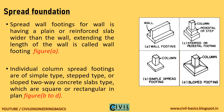The spread foundation: spread wall footings for a wall have a plain or reinforced slab wider than the wall, extending the length of the wall, and is called wall footing — see figures A, B to D for spread wall footing. Individual column spread footings are of simple type, step type, or sloped two-way concrete slabs type, which are square or rectangular in plan — see figure B to D for individual column spread footing. You can easily understand this type of foundation by seeing the diagrams given here.